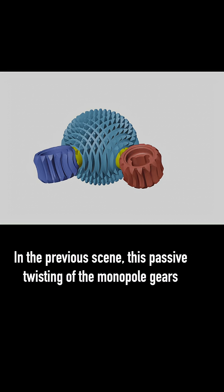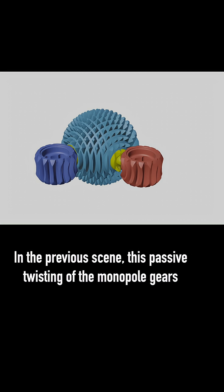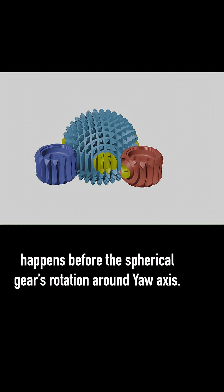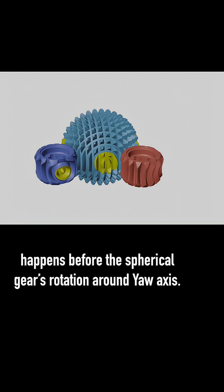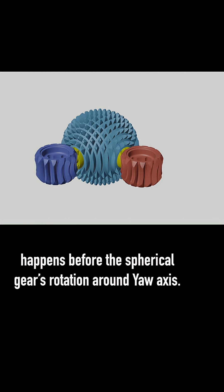In the previous scene, this passive twisting of the monopole gears happens before the spherical gear's rotation around the yaw axis.